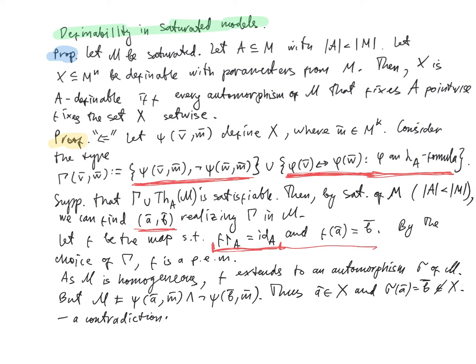But we also have that M satisfies ψ(ā, m̄) and not ψ(b̄, m̄), because these sentences were contained in Γ and (ā, b̄) realize Γ. Thus ā belongs to X but its automorphic image σ(ā) = b̄ does not belong to X. But this is a contradiction, because we assumed X is fixed setwise by any automorphism σ fixing A pointwise, and σ extends f which fixes A pointwise. So this gives us a contradiction, hence Γ is not satisfiable.